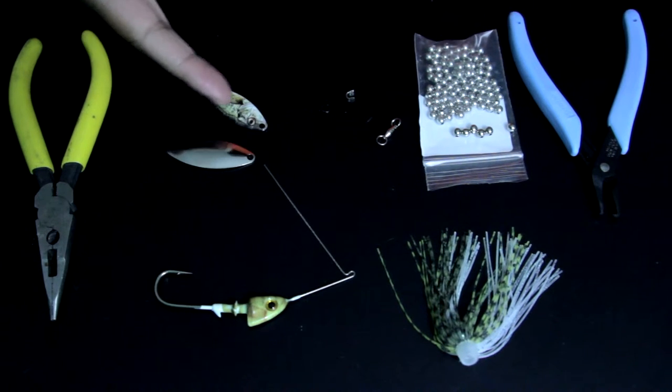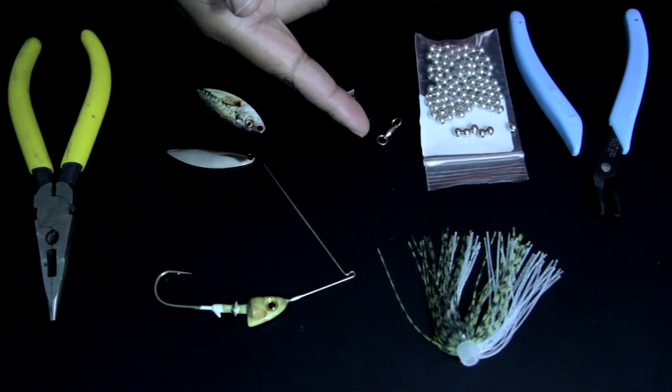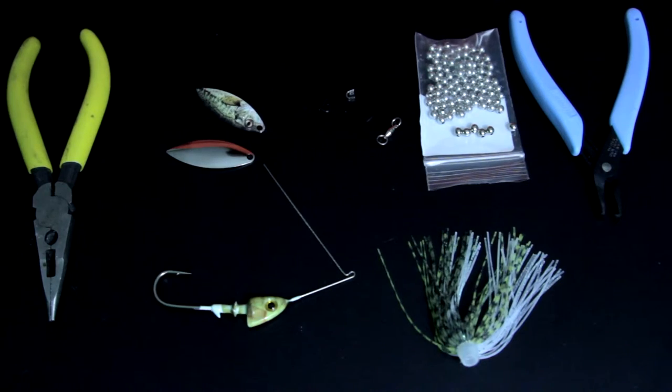So I buy the willow blades, the head, the beads, the clevis, the swivels and the skirts all on lurepartsonline.